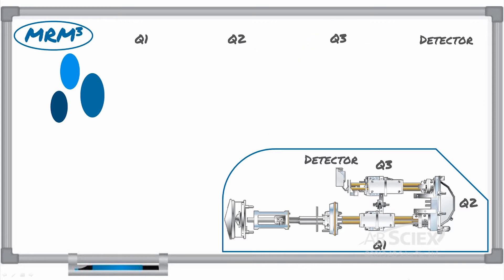The process of collecting MRM cubed transitions is similar to an MRM ion scan in the beginning. The precursor ion is selected and fragmented in Q2. However, with a QTRAP system, the product ions are collected in the Q3 linear ion trap, or LIT. One specific product ion of interest is isolated, and the other ions are destabilized in Q3.